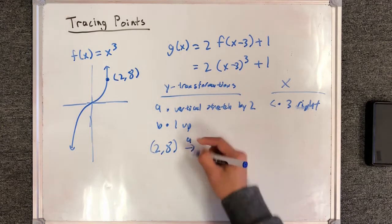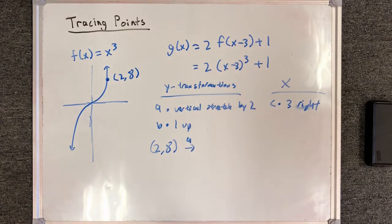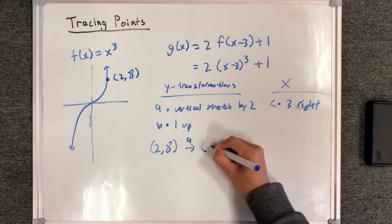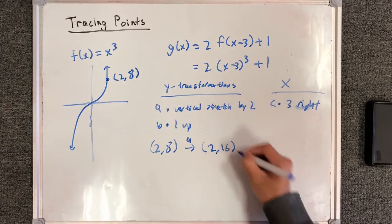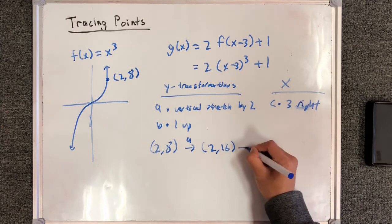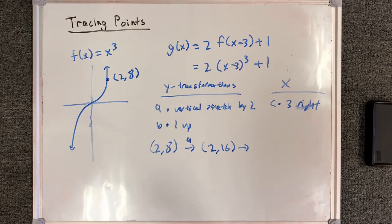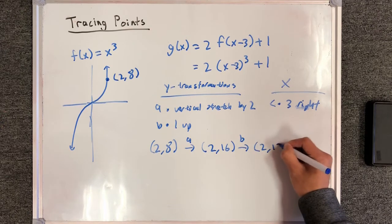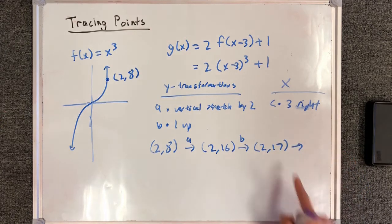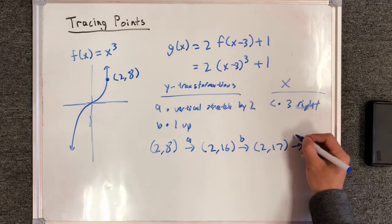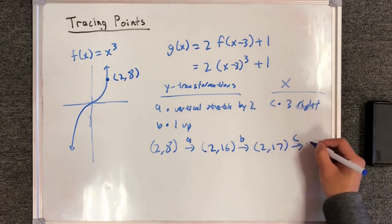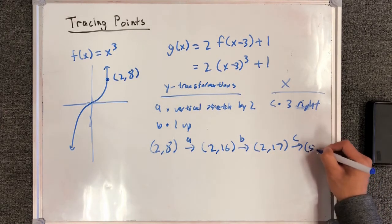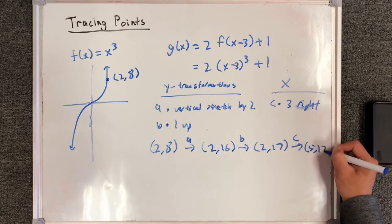If I apply transformation a — vertical stretch by 2 — that means take the y-coordinate and double it, so I'll have 2 comma 16. Let's apply the second y transformation: we'll be moving it 1 unit up, giving 2 comma 17. And finally apply my c transformation, which is my x transformation — 3 units to the right means add 3 to the x — so 5 comma 17.